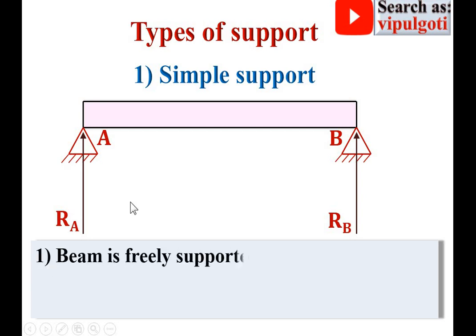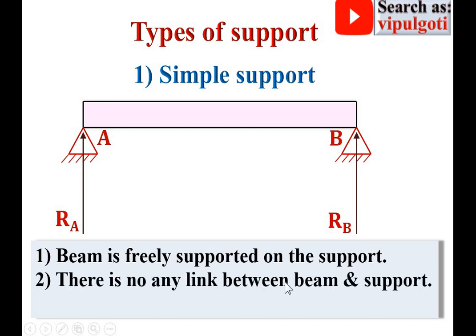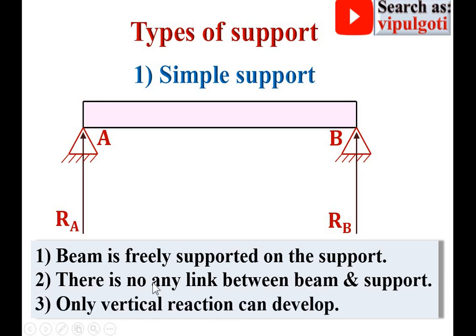For simple support: first, the beam is freely supported on the support. Second, there is no link between the beam and support — no mechanical device or mechanical link joining these two components. Only vertical reaction can develop at the ends. Here you can see RA and RB are the vertical reactions that can develop.